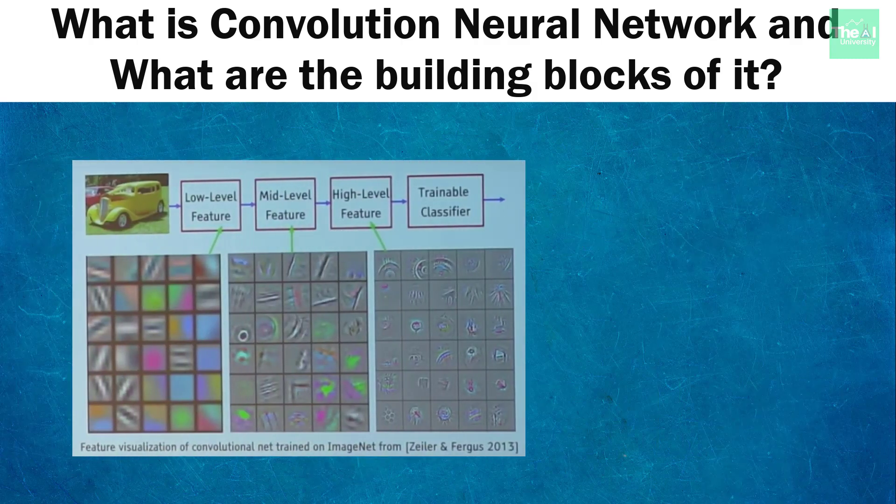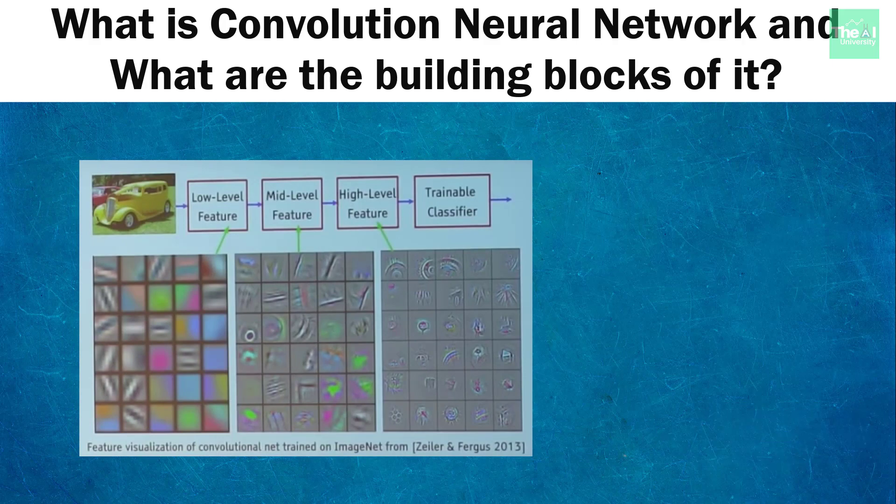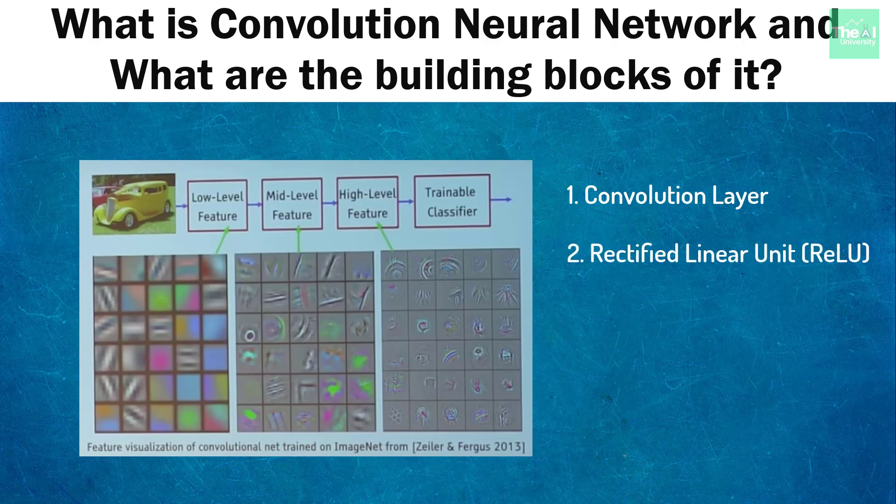Consider this car image. You can see the computer segregates it into various low-level, mid-level, and high-level features to understand the details about that image. To understand these features of an image, CNN makes use of various layers like convolution layer, rectified linear unit or ReLU layer, pooling layer, fully connected layer, etc. I am going to cover each of these layers in detail in the upcoming videos.